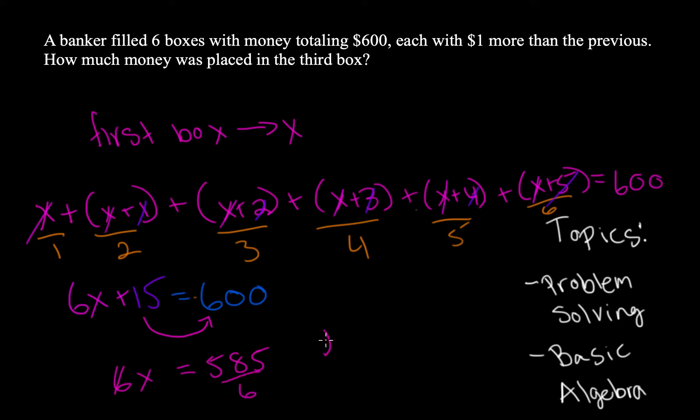Divide by 6. 585 divided by 6 is equal to 9. 6 times 9 equals 54. Subtract. Pull down the 5. Divide again. You get 7.